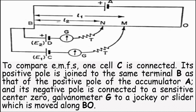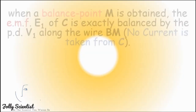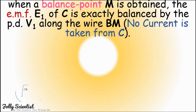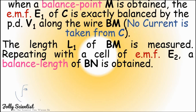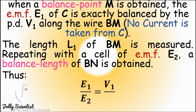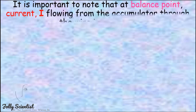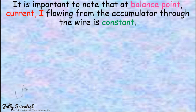To compare EMFs, cell C is connected with its positive pole joined to terminal B — the same as the positive pole of accumulator A — and its negative pole is connected to a sensitive center-zero galvanometer G and a jockey (slider) moved along BO. When a balance point M is obtained, the EMF E1 of C is exactly balanced at length L1 along wire BM.